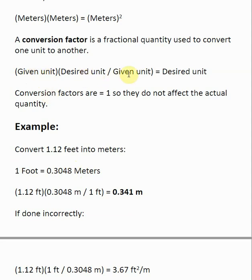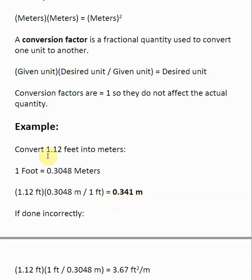We're taking a given unit and multiplying by one to get a desired unit out. The given unit is in feet, so I set this up as a ratio. I want feet on the bottom so they cancel — that's what dimensional analysis tells us. So 0.3048 meters goes on top, 1 foot goes on the bottom. I do the multiplication: feet divided by feet cancels, giving me meters. Then I do the math: 1.12 times 0.3048 gives an answer of 0.341 meters. So 1.12 feet is equal to 0.341 meters.